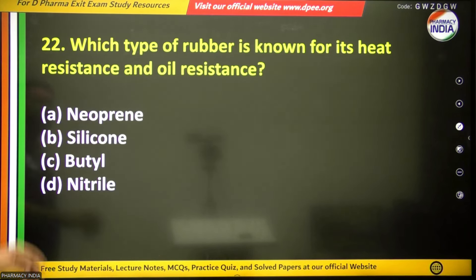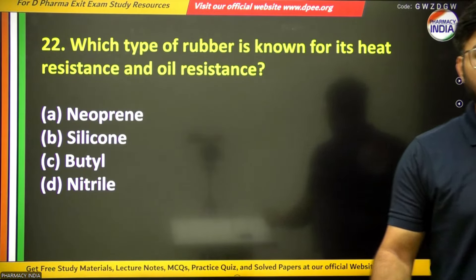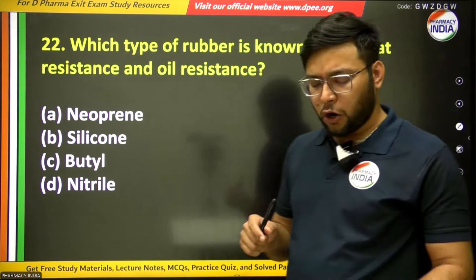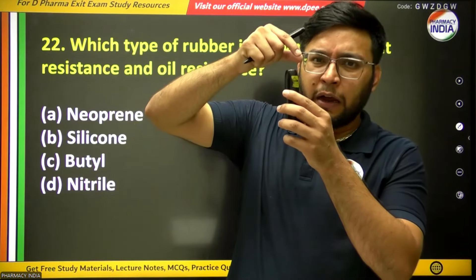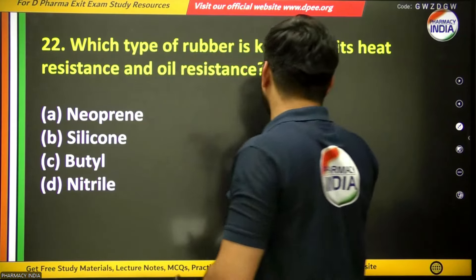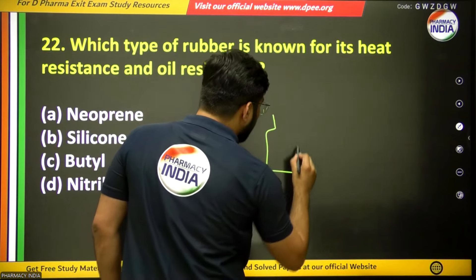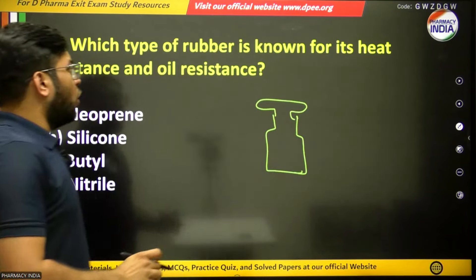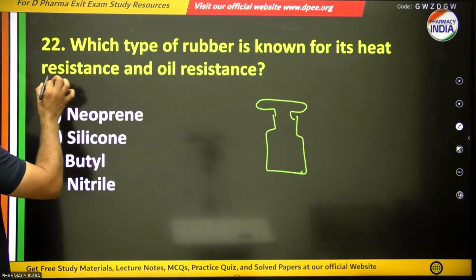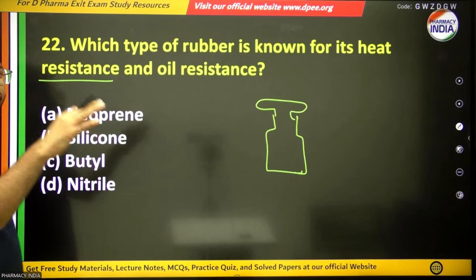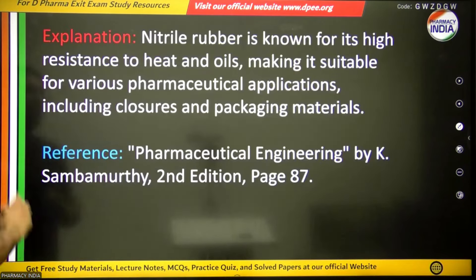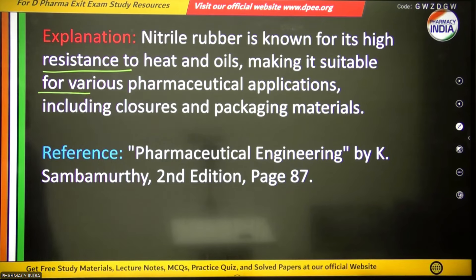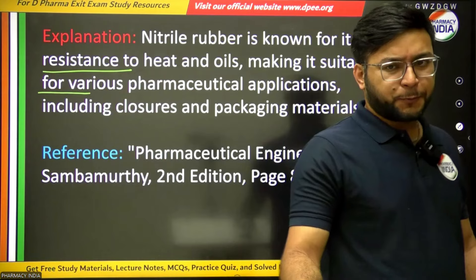The twenty-second question: which type of rubber is known for its heat resistance and oil resistance? Rubber closures are observed in injectable formulations as stoppers on glass bottles. The answer is nitrile rubber — nitrile rubber is known for its high resistance to heat and oils, making it suitable for various pharmaceutical applications including closures and packaging materials.